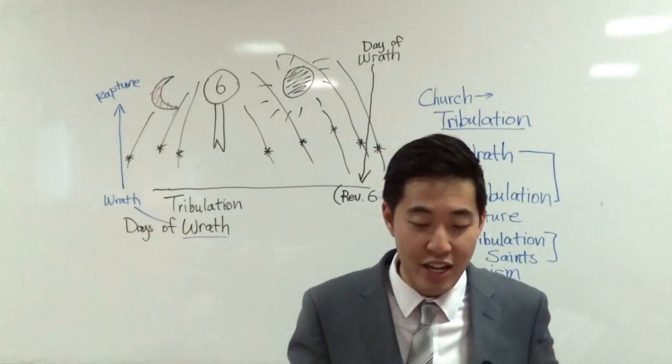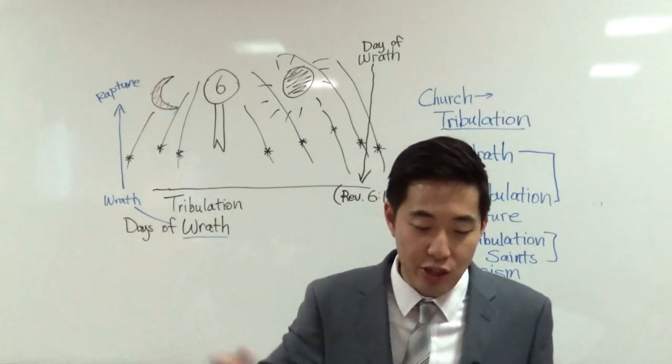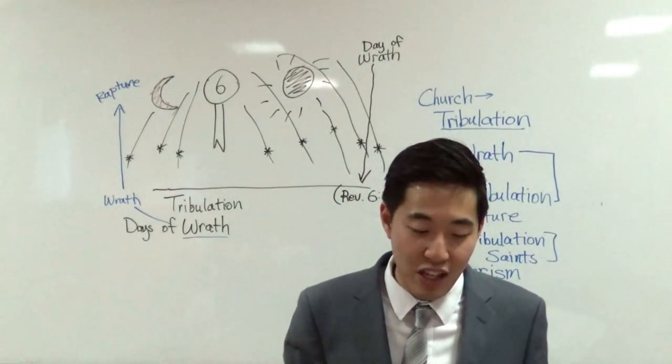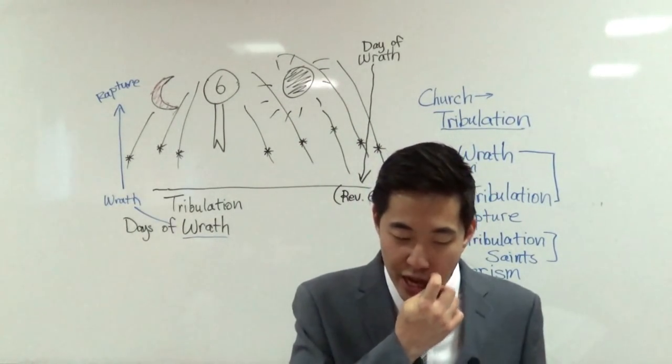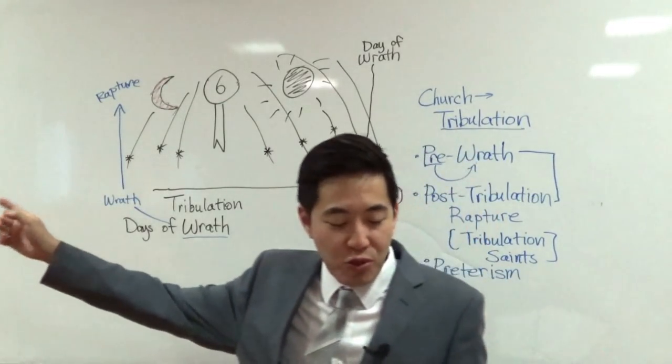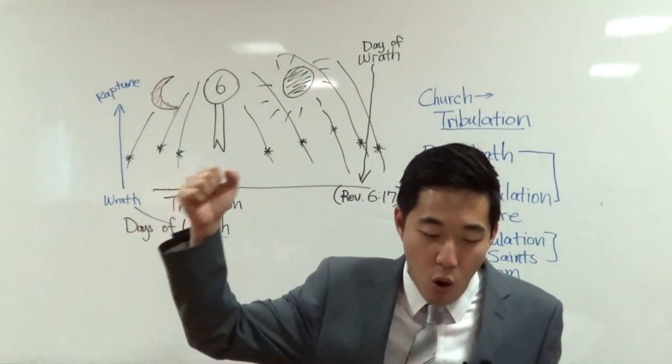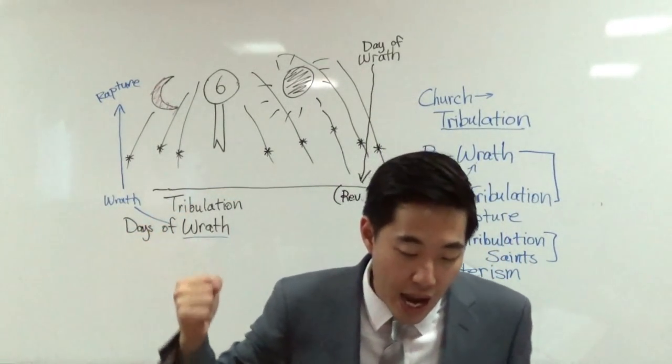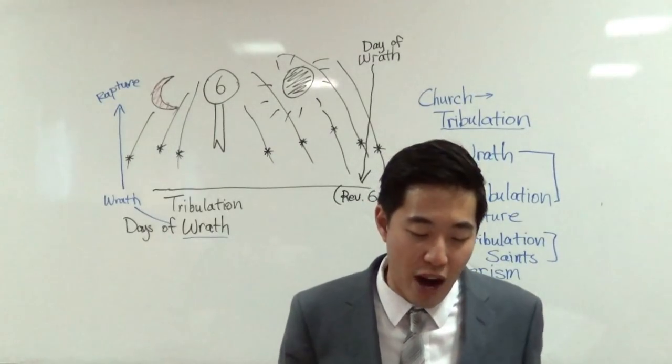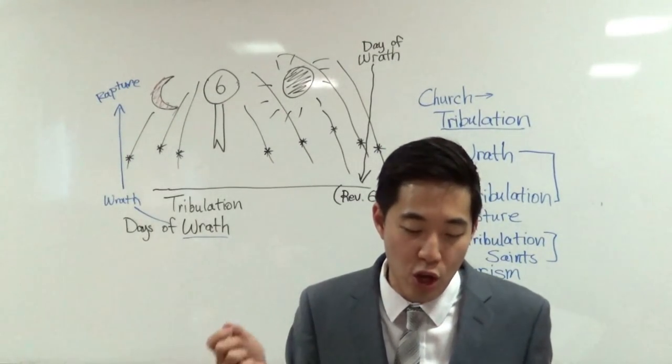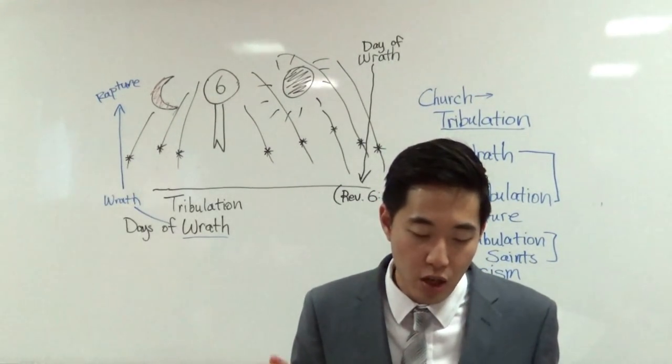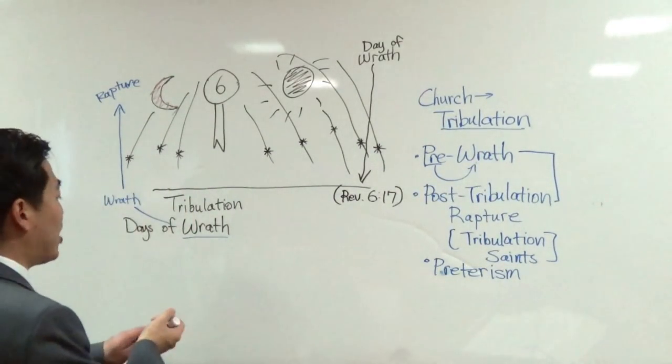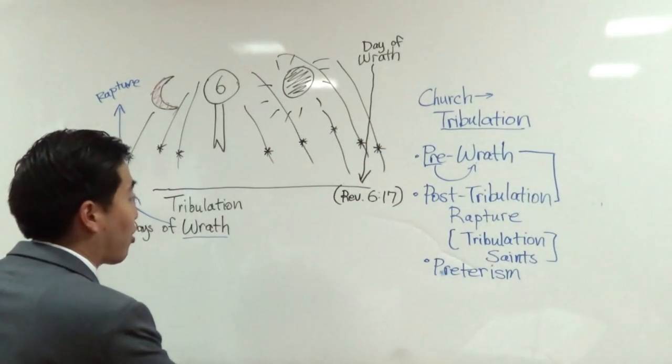Now look at verse two. And I saw another angel ascending from the east. So this angel comes from the east, having the seal of the living God. That's interesting. So there's this angel who comes from the east direction, holding a seal, God's seal. Why is that? Well, let's just continue reading. And he cried with a loud voice to the four angels.